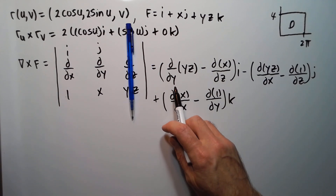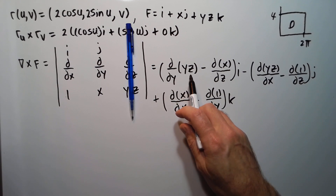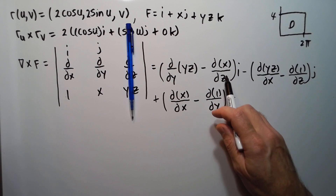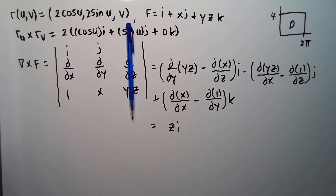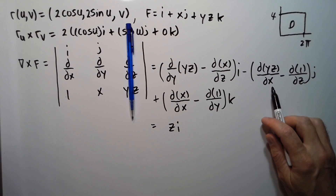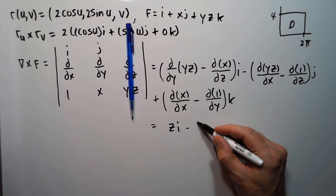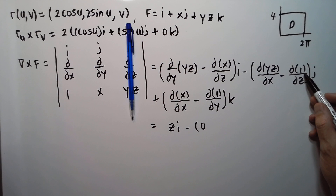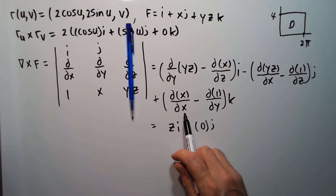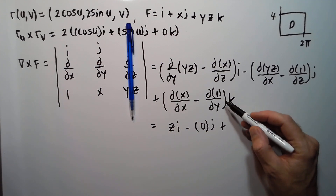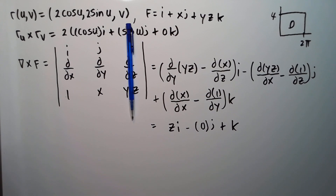Working out each component: ∂/∂y(yz) = z, and ∂/∂z(x) = 0, so the i component is z. For the j component: ∂/∂x(yz) = 0 and ∂/∂z(1) = 0, so it's 0j. For the k component: ∂/∂x(x) = 1 and ∂/∂y(1) = 0, so it's k. Therefore, the curl of f equals zi + 0j + k.